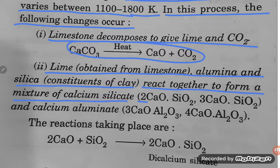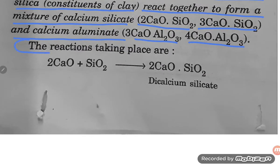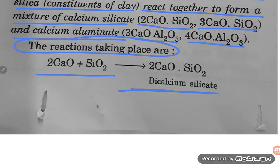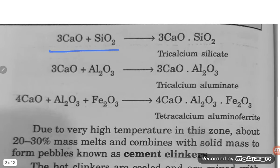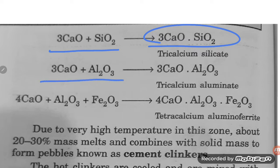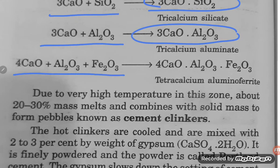The products formed are: 2CaO·SiO₂, 3CaO·SiO₂, CaO·Al₂O₃, and CaO·Al₂O₃·Fe₂O₃. The reactions are: CaO + SiO₂ → CaO·SiO₂ (calcium silicate); CaO + Al₂O₃ → CaO·Al₂O₃; and CaO + Al₂O₃ + Fe₂O₃ → CaO·Al₂O₃·Fe₂O₃.